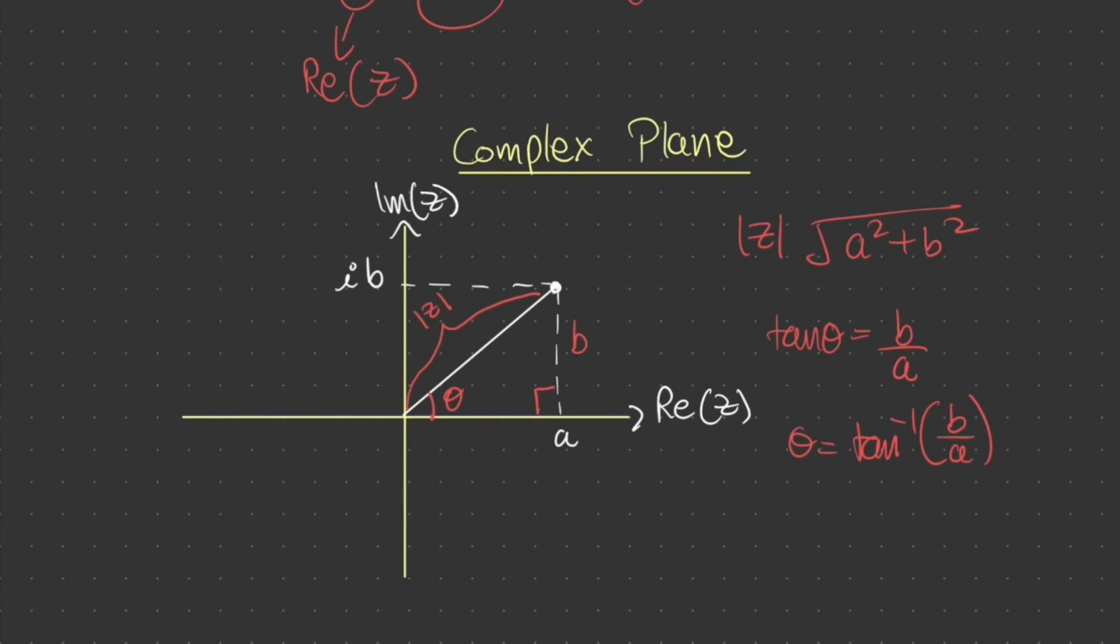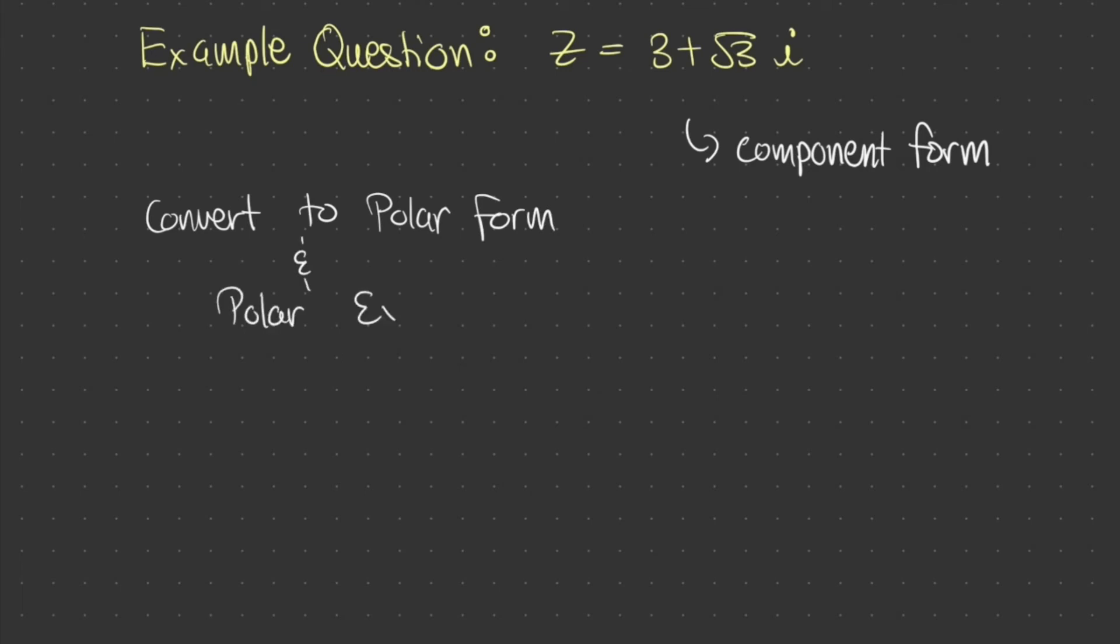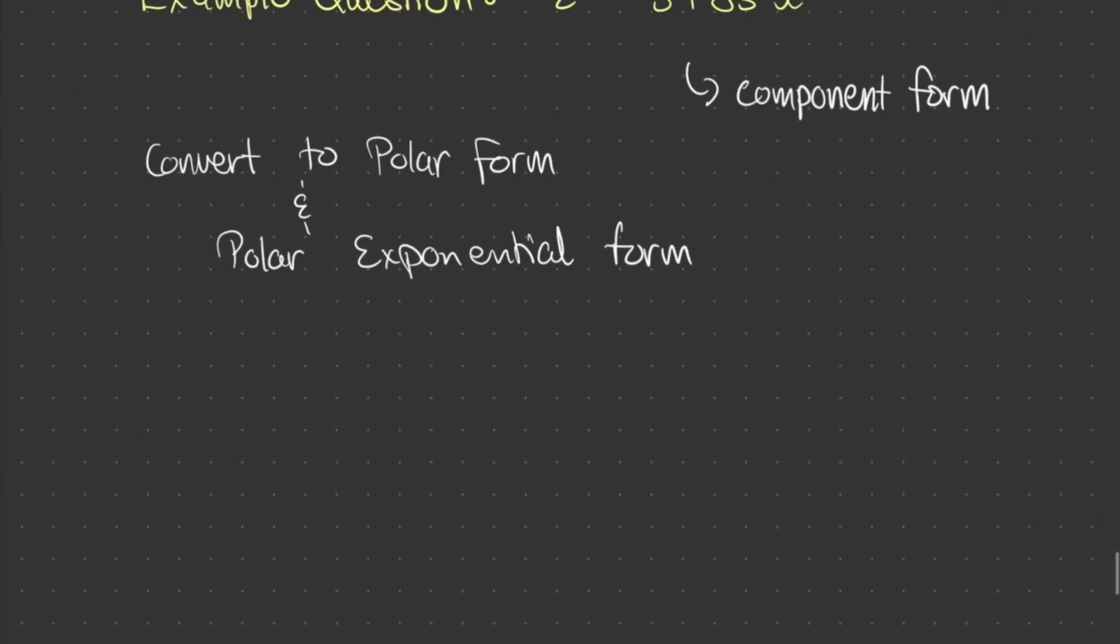Now, let's look at an example question. z is equal to 3 plus square root of 3i. Now remember, this is in the component form. Now, let's try to convert this into a polar form and polar exponential form. If you would like, you can pause the video here and have a go at it. Now, hopefully you got the right answer. If not, we'll go through it now.